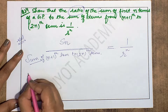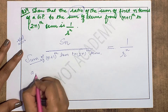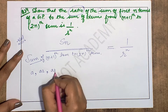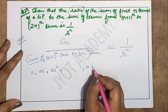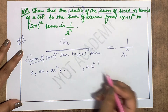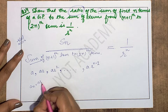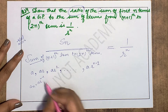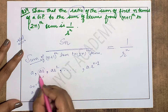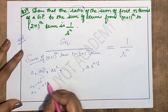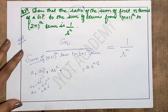In a geometric progression, the n terms are a, ar, ar², ..., ar^(n-1). The nth term using the formula a_n = ar^(n-1). For any specific term, substitute the term number into the formula. For example, for the 2nd term substitute n=2 to get ar.